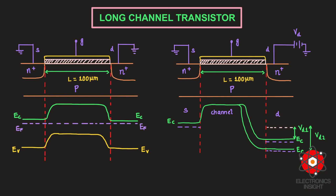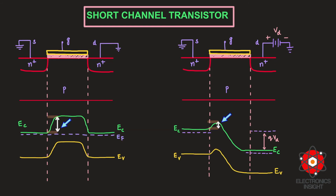Now let us analyze the short channel transistor using the band bending diagram. Here I have considered the short channel transistor with zero drain potential first. Just like the long channel transistor, the Fermi energy levels are similar under zero drain potential, with a barrier that electrons must surmount to flow from source to drain. However, the source and drain are much closer to each other.